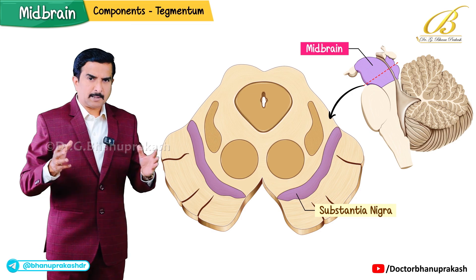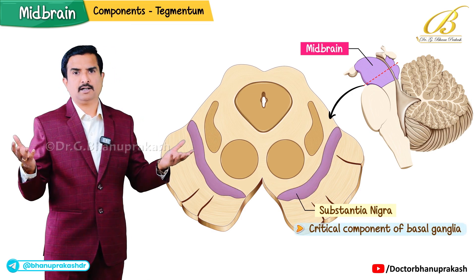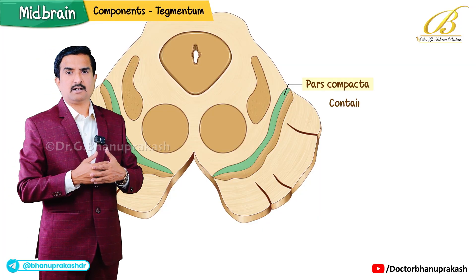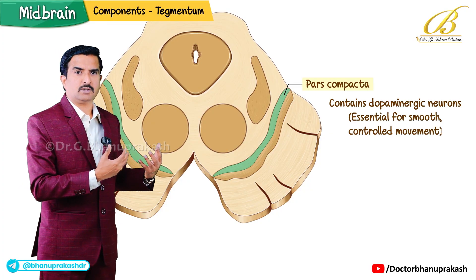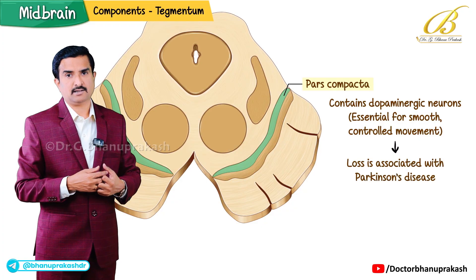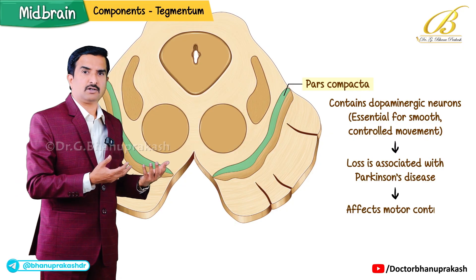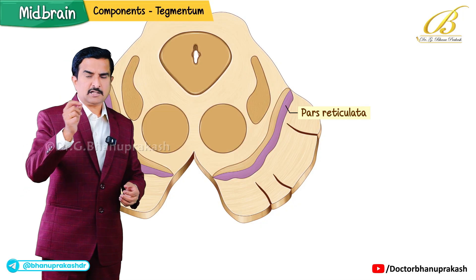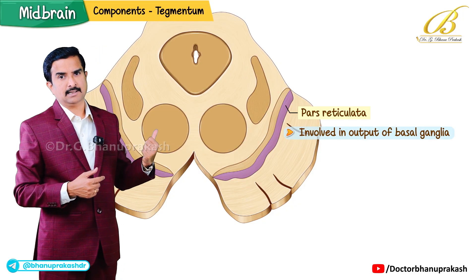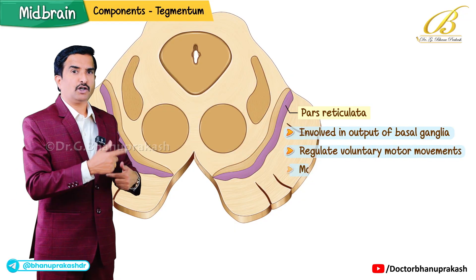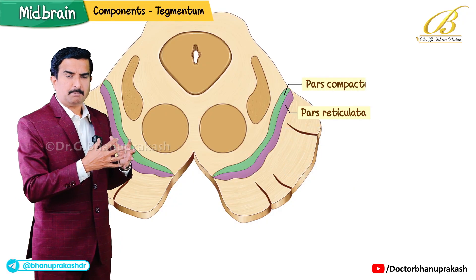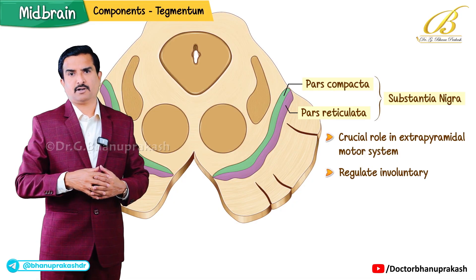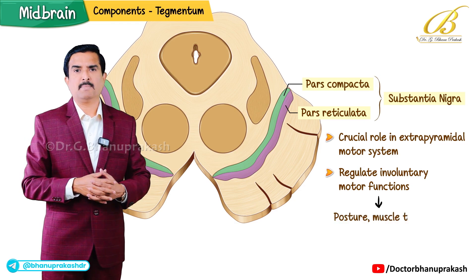The substantia nigra is a critical component of the basal ganglia involved in modulation of motor activity. It is composed of two parts: pars compacta and pars reticulata. Pars compacta contains dopaminergic neurons essential for smooth, controlled movement; loss of these neurons is associated with Parkinson's disease, a neurodegenerative disorder causing tremors, rigidity, and bradykinesia. Pars reticulata is involved in the output of the basal ganglia and helps regulate voluntary motor movements by modulating signals to the thalamus and cortex. Together, the substantia nigra plays a crucial role in the extrapyramidal motor system, regulating involuntary motor functions such as posture, muscle tone, and coordination.